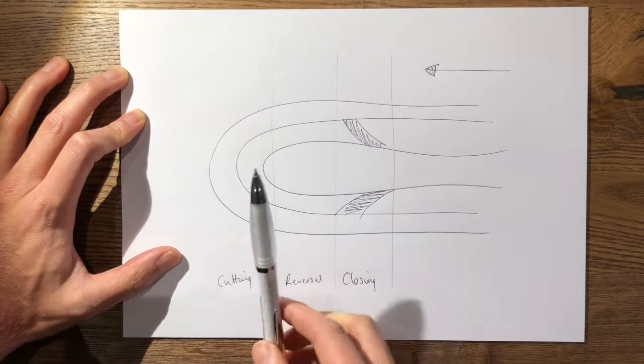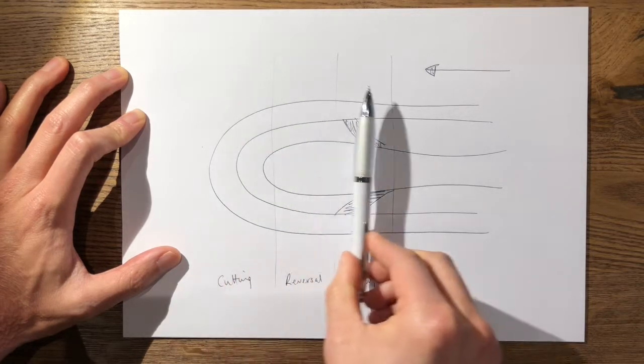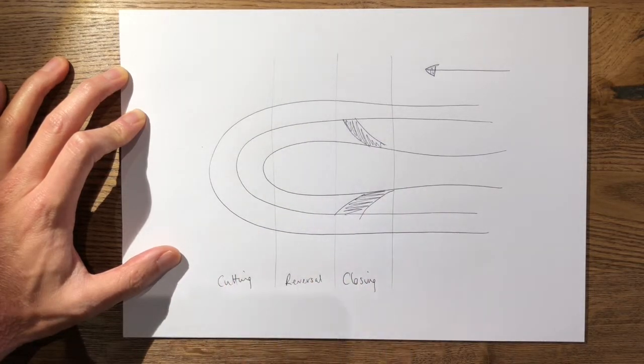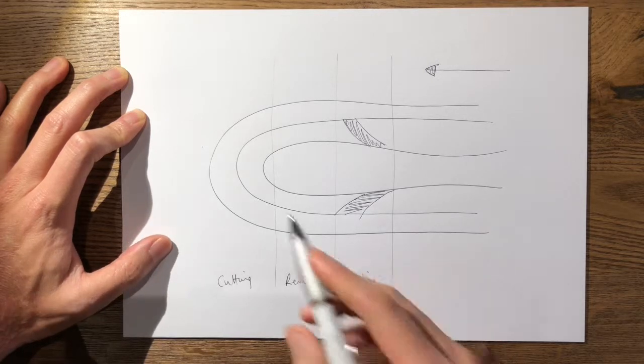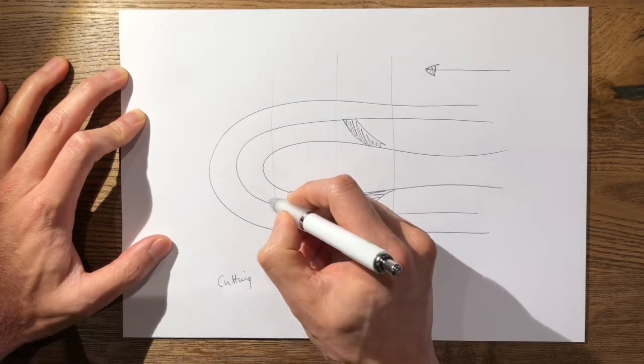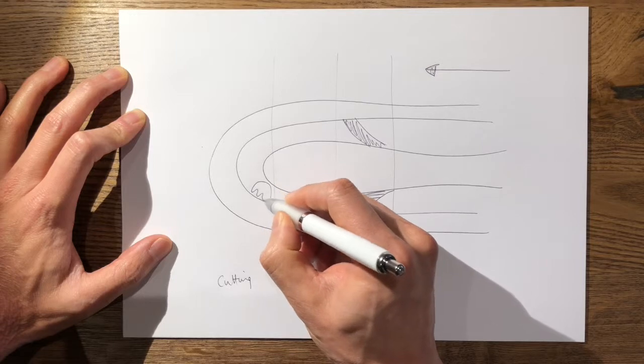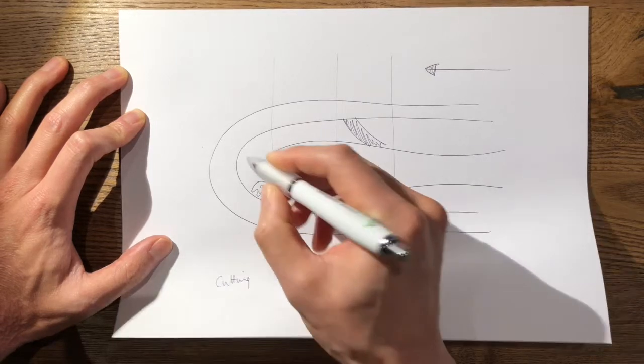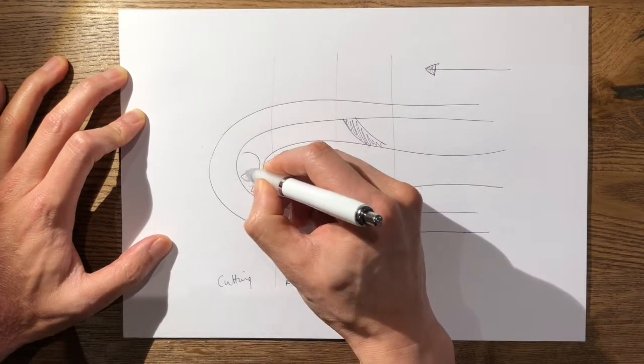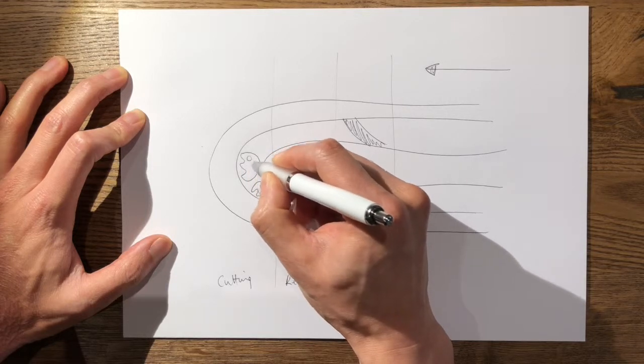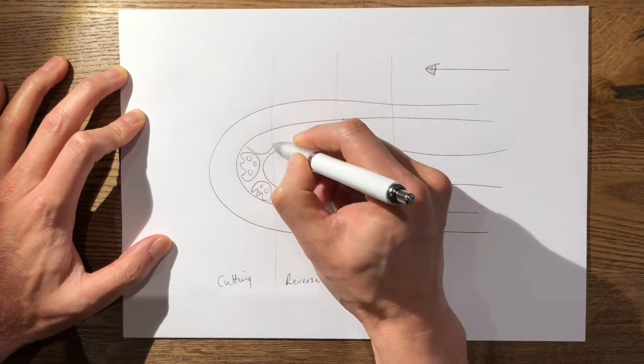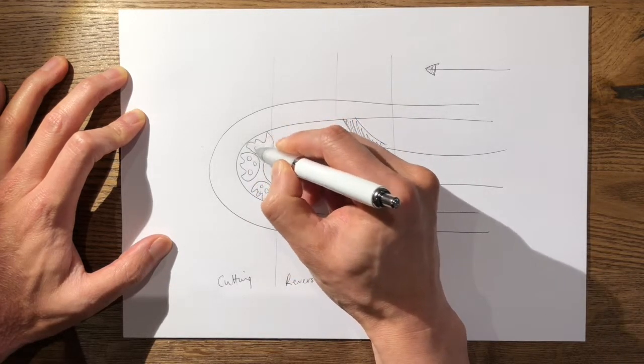This is important because you have different types of cells depending on which zone you're in. The front of the cutting cone is largely headed by osteoclasts—remember these are your multi-nucleated giant cells from the macrophage lineage which resorb bone.